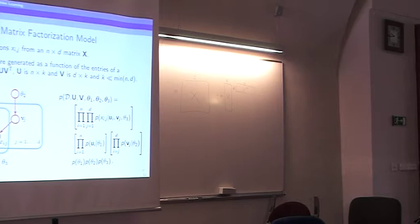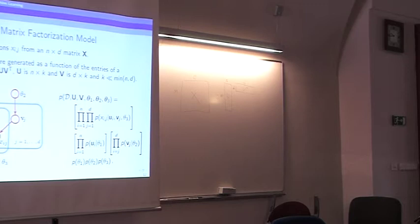There is a difference between this model and SVD factorization: this would be a Bayesian version of SVD. You can understand SVD as just being this model where you assume the conditional distribution is Gaussian and minimize the squared error with maximum likelihood estimation of U and V.